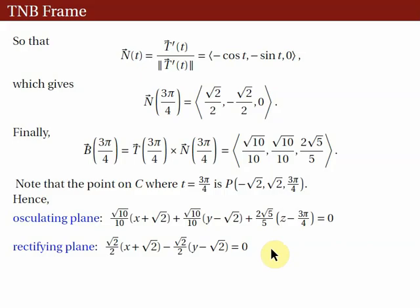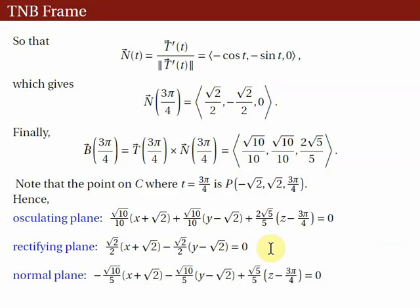Finally, for the normal plane, the unit tangent vector T is perpendicular to this plane. So the equation of the normal plane is formed using the components of the unit tangent vector and the coordinates of point P, set equal to zero.